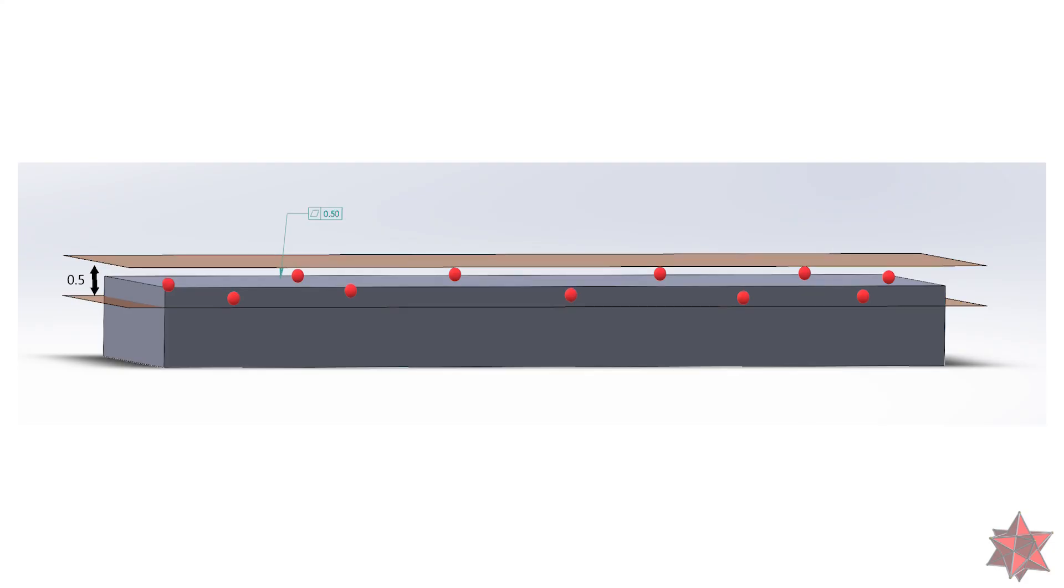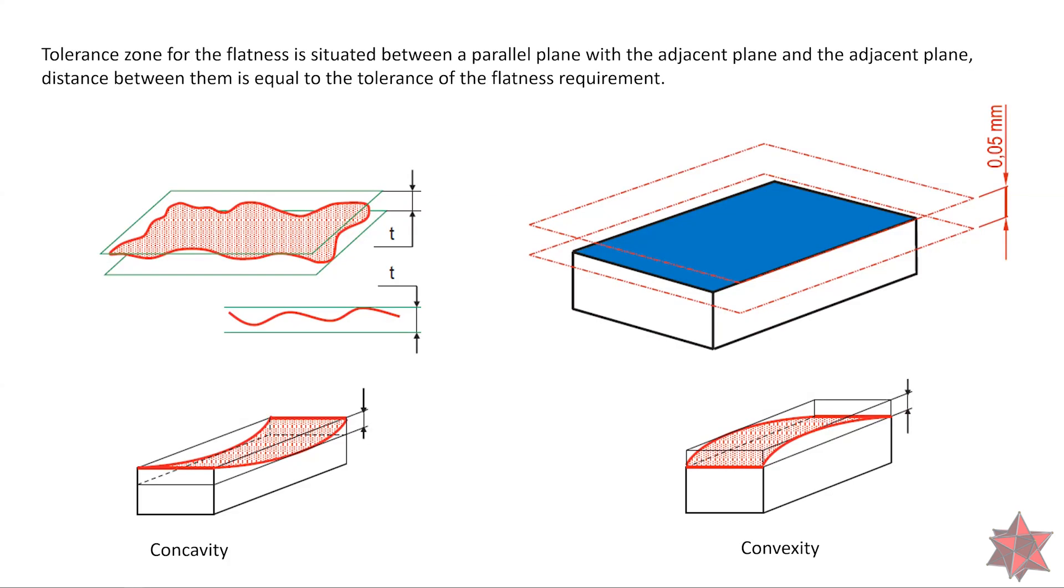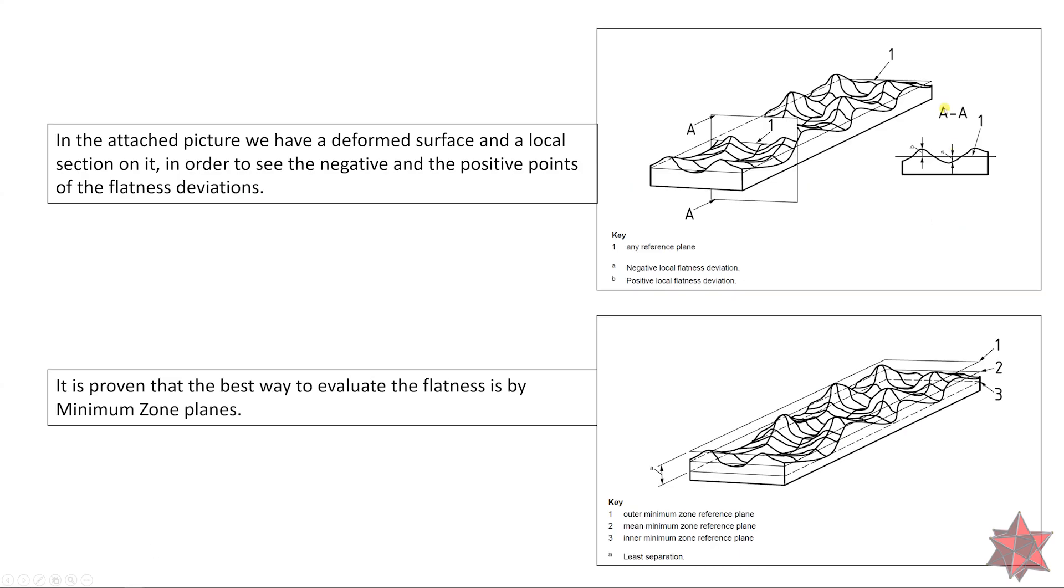In a flatness deviation we can have forms like concavity or convexity and any deviated form. As we see here in the attached picture we have a deformed surface and the local section on it in order to see the negative and the positive points of the flatness deviation. This is the negative local flatness deviation where we have a, and where we have b is the positive local flatness deviation from this section.